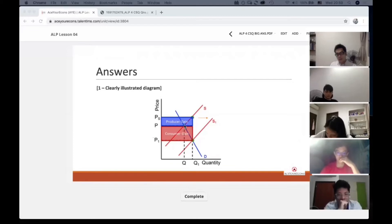But now, the consumer is paying at P1 instead of P, and the producer receives PX instead of P.